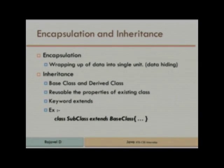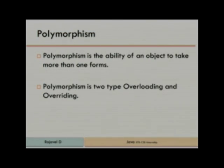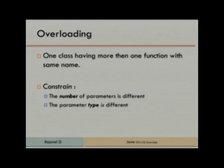Inheritance: reusing the property of existing class. For inheritance we use the keyword 'extends'. Polymorphism: the ability of an object to take more than one form. Method overloading is when we create more than one method with the same name. That is overloading — the behavior name is same but the behavior may differ. For example, summing two numbers and summing three numbers.